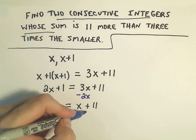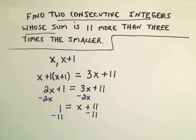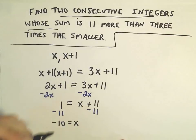To get rid of the positive 11, I'm going to subtract 11 from both sides. On the left side, we have 1 minus 11, which is negative 10. On the right side, we're simply left with x.